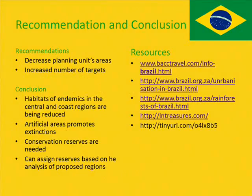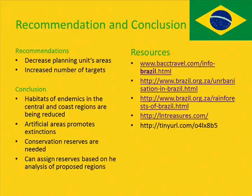It is recommended that the planning unit areas are decreased to have more accurate outlines of the proposed reserves. It is also recommended to use an increased number of targets, which will assist in establishing better reserves. Based on the current artificial land cover, we can conclude that habitats of endemics in the central and coastal regions are being reduced, posing threats such as possible extinctions to endemic species. This stresses the need for conservation reserves in these regions; with the proposed reserves analysed, we can assign reserves to these regions, even though it comes at a huge cost to the country but a huge plus for conservation of its endemic species.